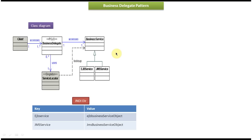This Business Service Object usually resides on the server side. When the server starts, this Business Service Object will be registered in the JNDI Directory as a key-value pair. We are registering this Business Service Object in the JNDI Directory so that the Client can do a remote lookup of this Business Service Object, get the reference of the Business Service Object, and access the methods of the Business Service Object.